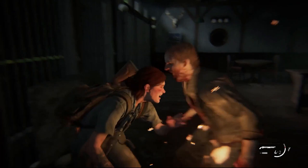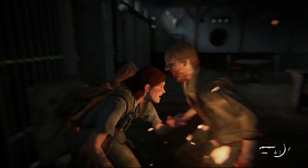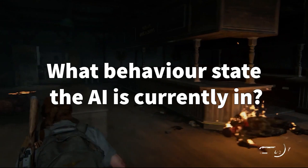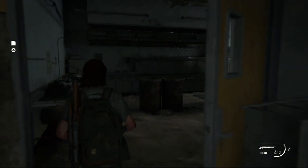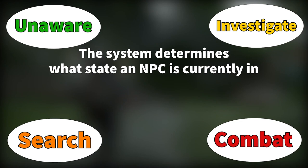First, AI behavior. To fit the context of the situation and ensure that the right family of dialogue lines are played, the system needs to know what behavior state the AI is currently in. The developers of The Last of Us Part 2 used a finite state machine with four different states: unaware, investigate, combat, and search. The system determines what state an NPC is currently in and selects dialogue lines according to the current behavior, eliminating the possibility of lines playing at inappropriate times, such as an NPC shouting combat lines while in an unaware state.